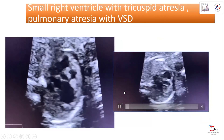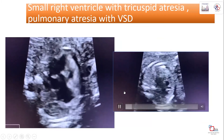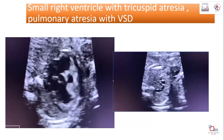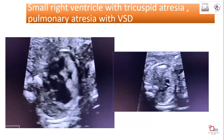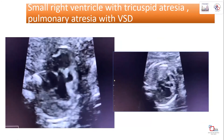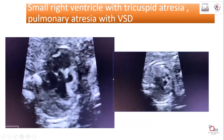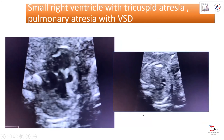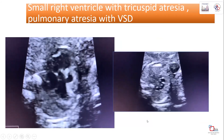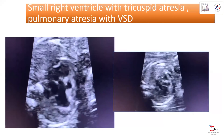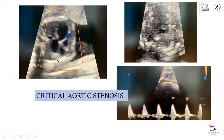This is a case of tricuspid atresia with pulmonary atresia. The pulmonary artery is thin and smaller than the aorta. Color Doppler demonstrates the VSD clearly as well as thinning of the pulmonary artery and retrograde flow within the pulmonary artery.